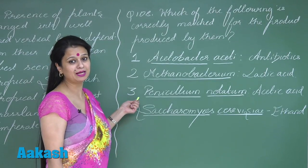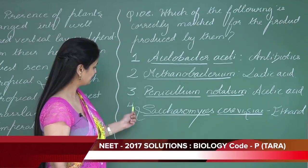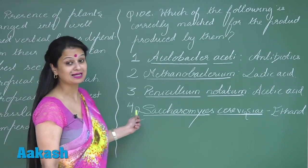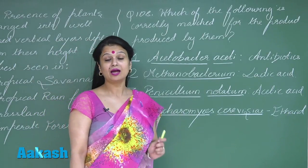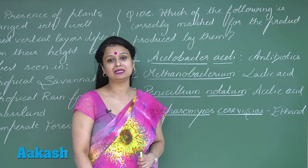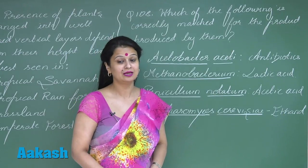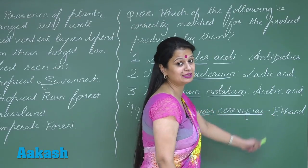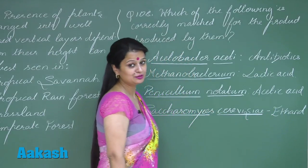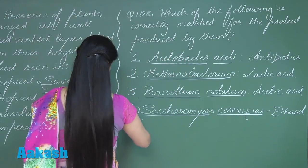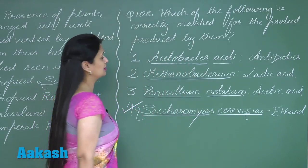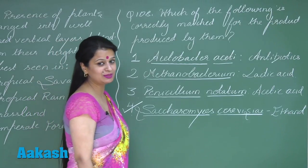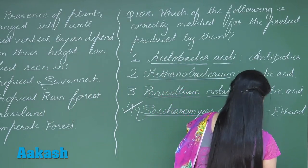Penicillium notatum is associated with the synthesis of the antibiotic penicillin. Saccharomyces cerevisiae is the brewer's yeast, and through fermentation it results in the formation of alcohol, that is ethanol. So this is the correct match — option 4 is correct for question number 108.